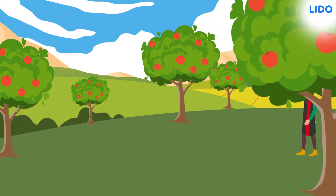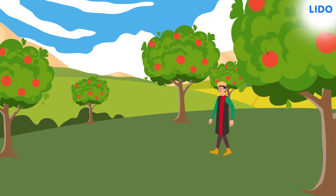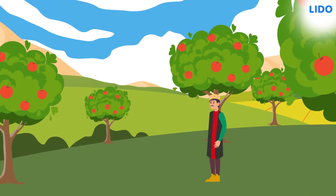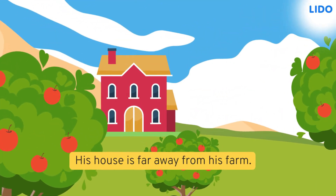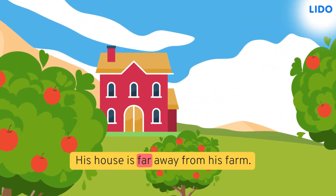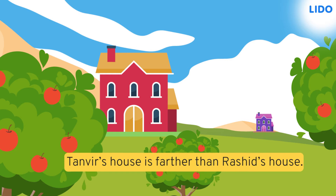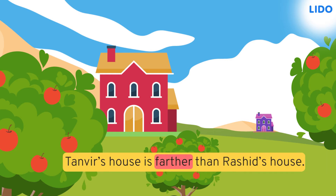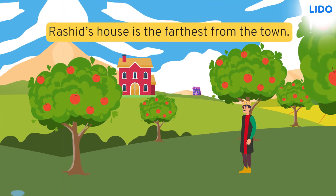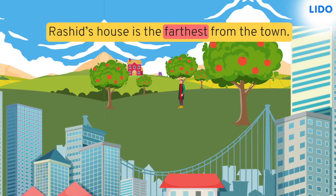Hi there. Here is Rashid walking in his apple farm. His house is quite far away from his farm. Tanvir's house is farther than Rashid's house. Rashid's house is also the farthest from the town.